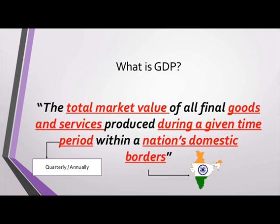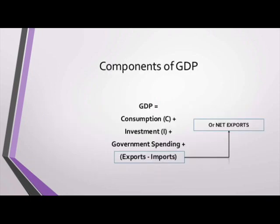The actual formula is: consumption plus investment plus government spending plus exports minus imports, related to the components of GDP, also known as net exports.